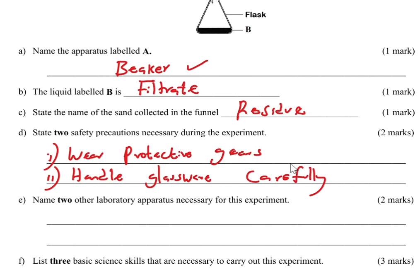Filter funnels, beakers, and flasks are made of glass, therefore you need to handle them gently to prevent breakage and injury. A third option: avoid overfilling with water — do not pour too much liquid into the funnel as it can overflow and cause spills or contamination. You can give any two of these and you'll score those two marks.